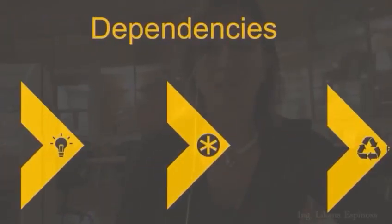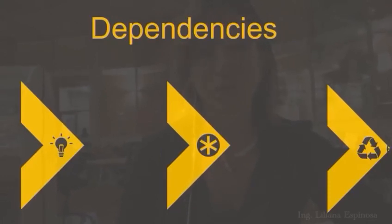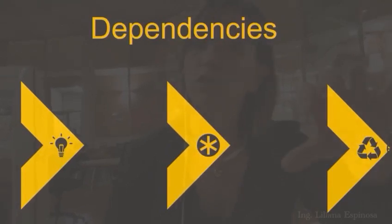We have three types of dependencies: data dependencies, control dependencies, and resource dependencies. The execution of a process depends on the result of the execution of another process. We need to have that in mind when we are talking about execution and instructions executing in parallel. The main point before we see the techniques that exist is that we are going to find some dependencies.